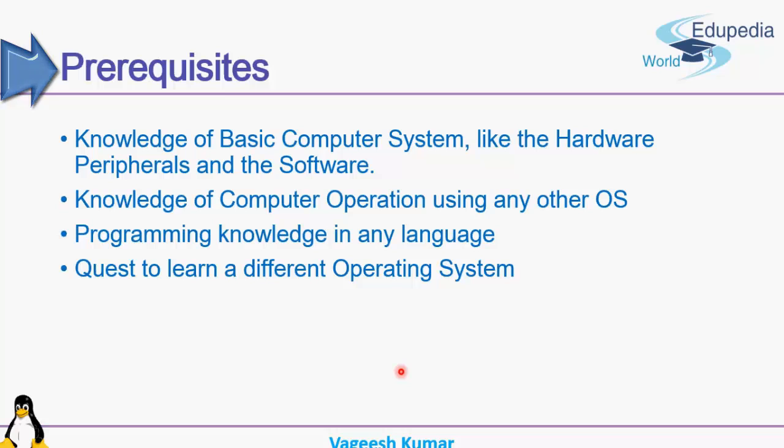Now, about the prerequisites of this course: you should know the basics of a computer system — hardware and peripherals like keyboard, mouse, RAM, ROM, and hard disk. You should also have a basic knowledge of computer operation using any other operating system like Windows or Mac OS, as we will usually be comparing the Linux environment to the Windows operating system.